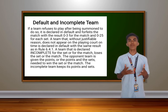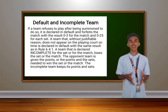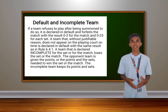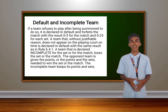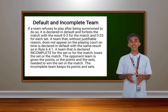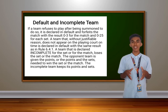Next is default and incomplete team. If a team refuses to play after being summoned to do so, it is declared in default and forfeits the match with a result of 3-0 for the match and 0-25 for each set. A team that without justifiable reason does not appear on the playing court on time is declared in default with the same result. A team declared incomplete for the set or match loses the set or match, and the incomplete team keeps its points and sets.